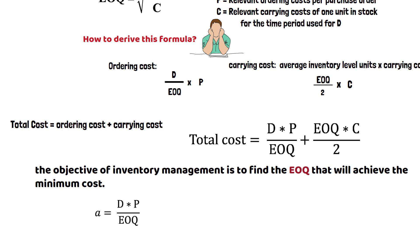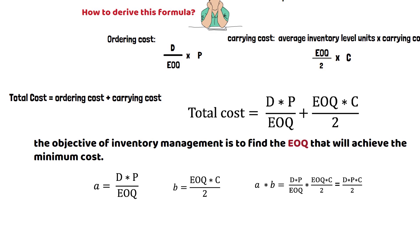Let's assume a equals D times P divided by EOQ, and b equals EOQ times C divided by 2. So a times b equals DP divided by 2. The multiplication of a and b is a constant.